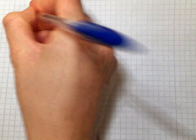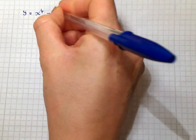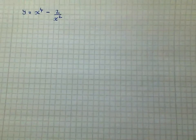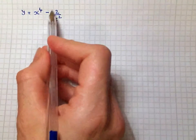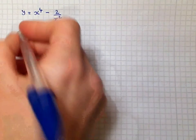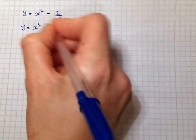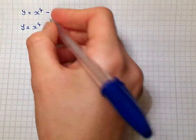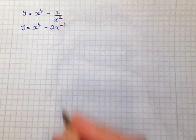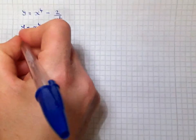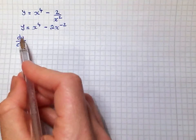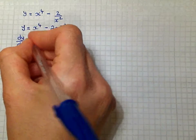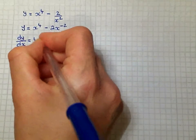Differentiation tutorial at higher level. The first thing I'm going to deal with is if you're given a function with an index that gives a negative power — for example, x to the power of 4 minus 2, all over x squared. To differentiate that, you bring up the index and the power changes to a minus. So for dy/dx — that is, differentiating y with respect to x, the change in y with respect to x — you're getting 4x to the